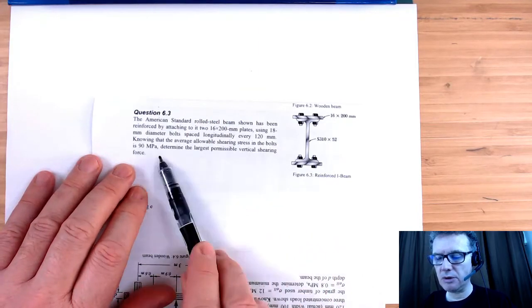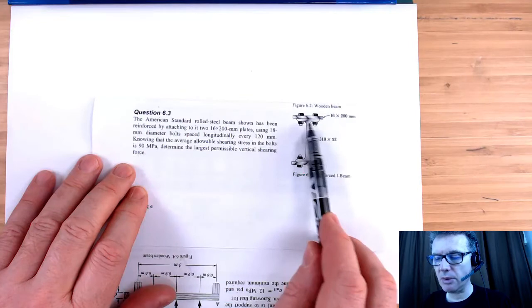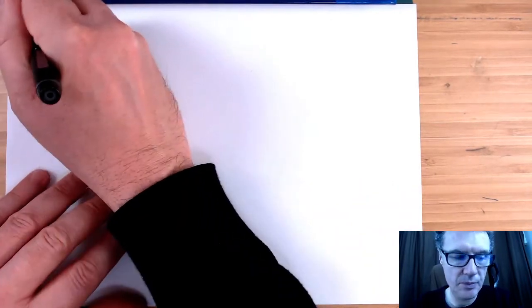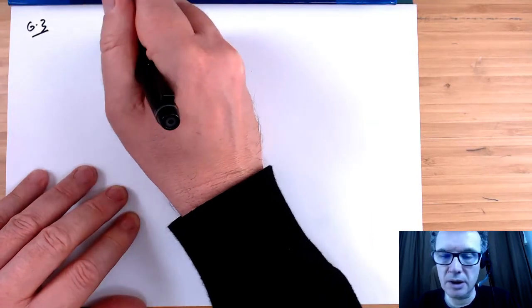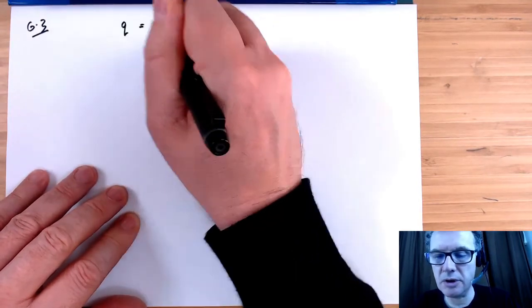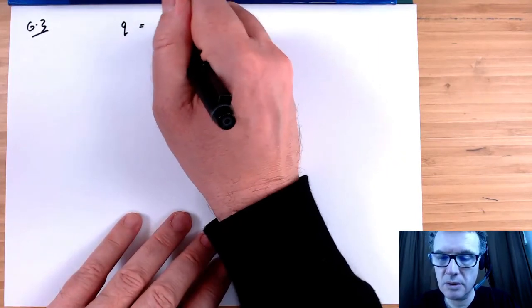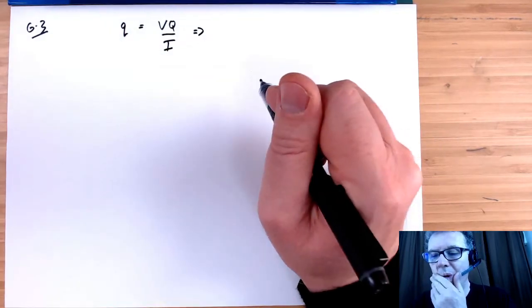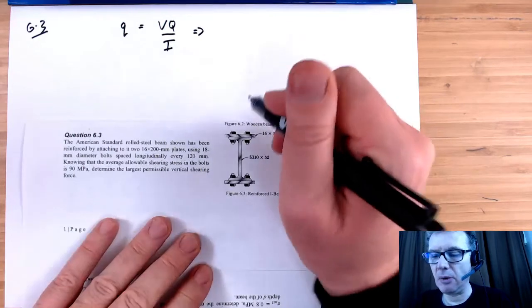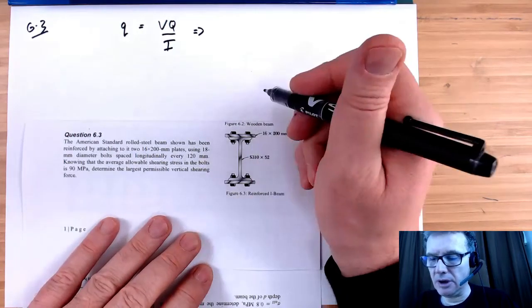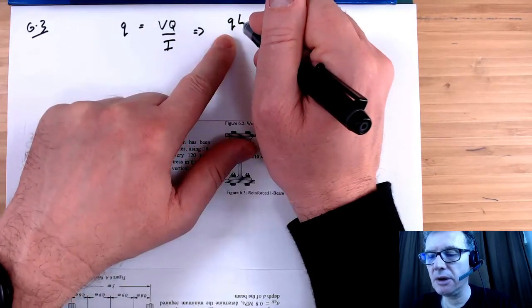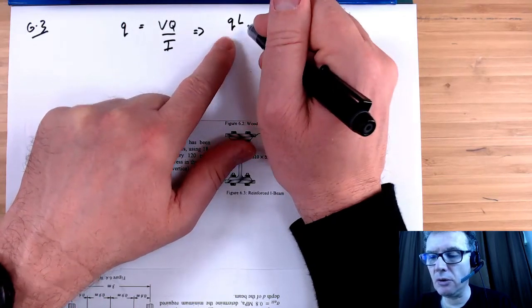We've been told there's a permissible amount of stress that can be applied in each bolt. This is quite similar to the previous problem. We start off with the shear flow equation, and we're applying four bolts every 120 millimeters, which gives us the force applied in each bolt — actually for all bolts.